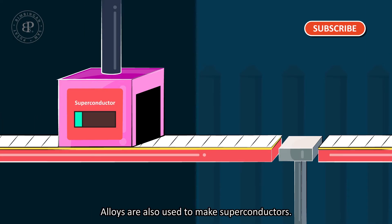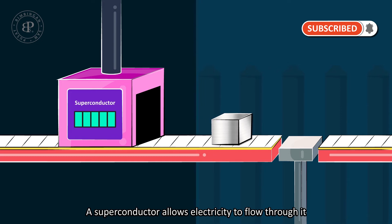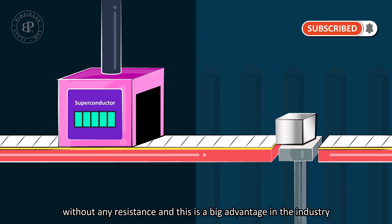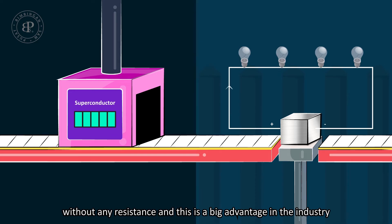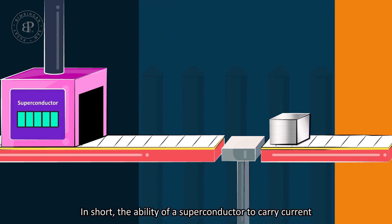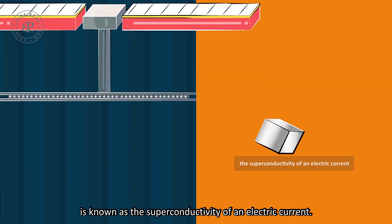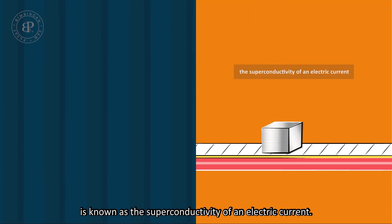Alloys are also used to make superconductors. A superconductor allows electricity to flow through it without any resistance and this is a big advantage in the industry because it saves them a lot of energy. In short, the ability of a superconductor to carry current is known as the superconductivity of an electric current.